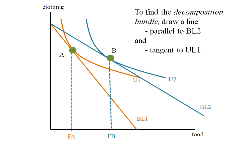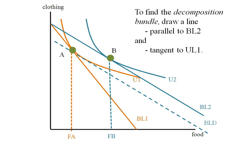In order to find the substitution and income effects graphically, we have to find what's called the decomposition bundle. This is a bundle located on a line parallel to my new budget line and tangent to my original indifference curve. The way I like to find this is to put my pencil down on my new budget line and back it up until I get tangent. Then I draw a line and label it BLD. At that tangency, that's bundle D for decomposition, and it contains FD units of food.